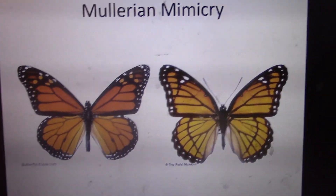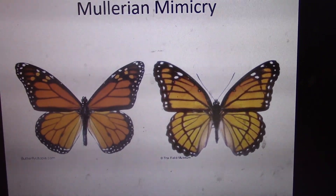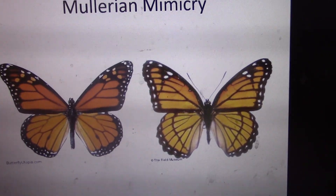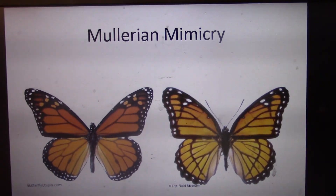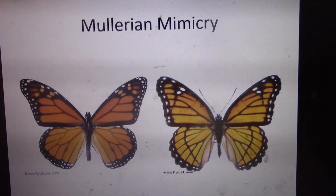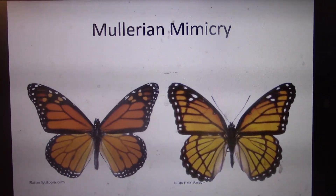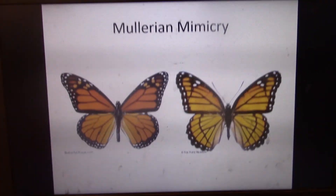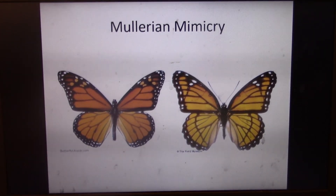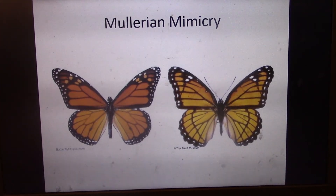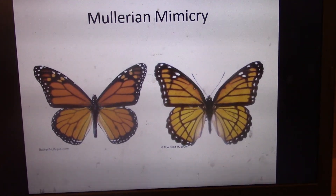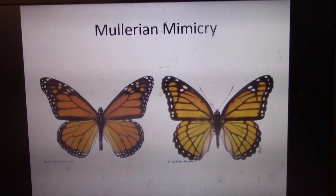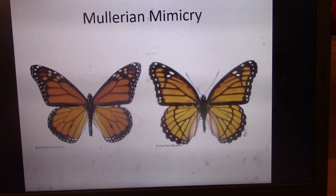Animals that have had negative experiences with either organism will associate the harmful enzymes of the tiger butterfly with a monarch, or the neurotoxin of the monarch with a tiger butterfly — giving them protective capacity with each other. This increases the sample size of predators that have had experience with one organism, increasing the number that will avoid both. This is convergent evolution where they've evolved to look like each other to solve a common problem — that's Müllerian mimicry. Both have harmful properties but not the same ones.